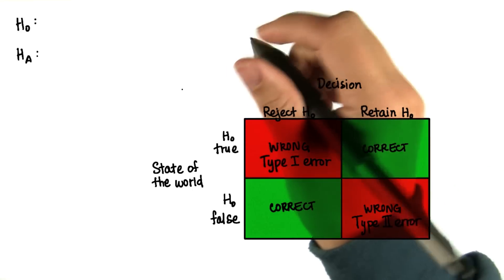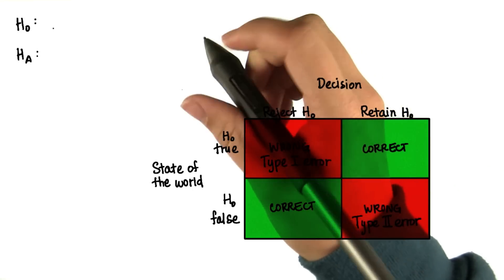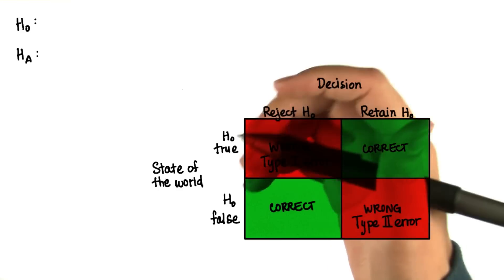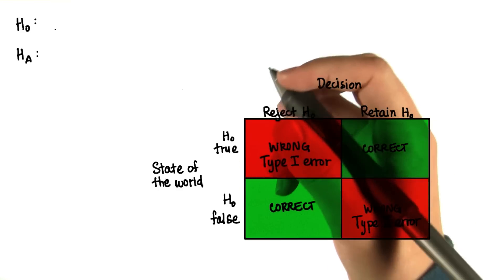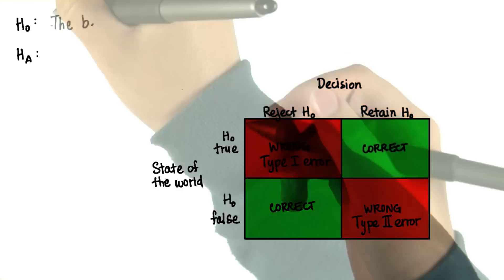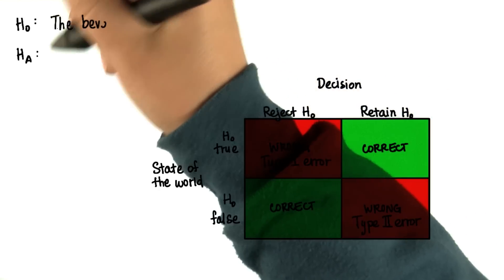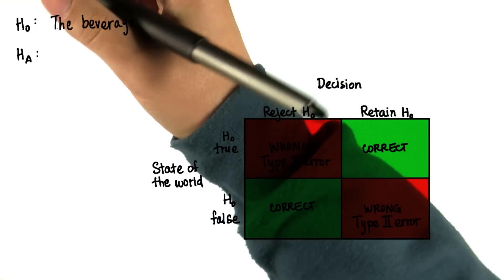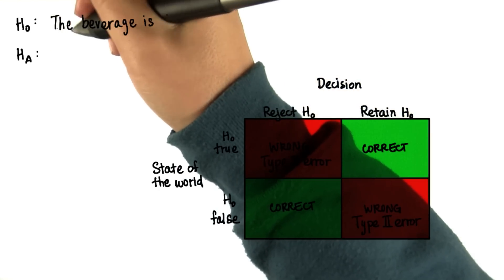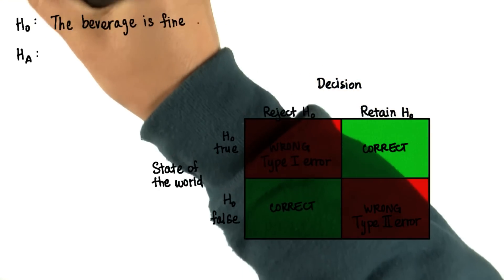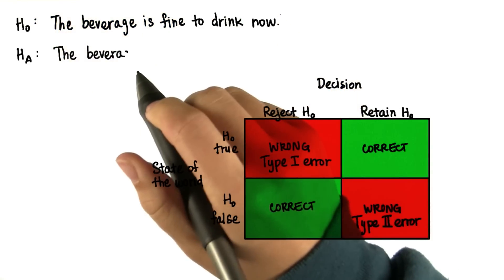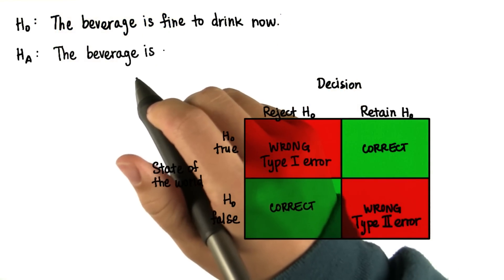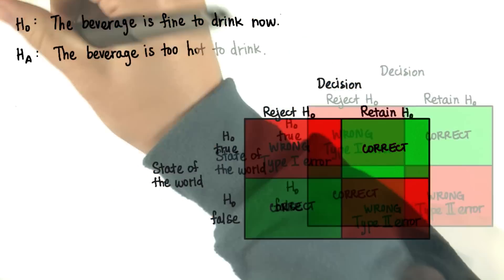Let's go through a simple example of type 1 and type 2 errors. Have you ever sipped a beverage that was too hot and burned your tongue? Let's say that the null hypothesis is that the beverage is fine to drink — it's not too hot, it's perfect. The alternative hypothesis then is that the beverage is too hot to drink.